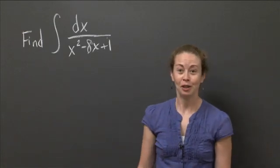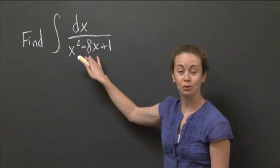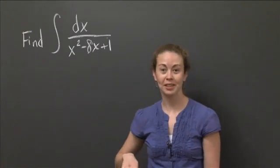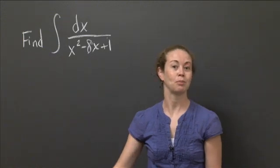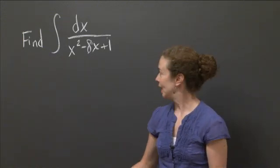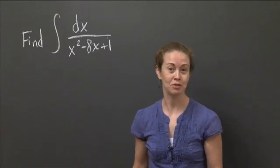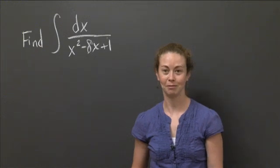So welcome back. Well, what we'd like to do is find an antiderivative to 1 over x squared minus 8x plus 1. And how we're going to do that is we're going to use the technique completing the square. I'm going to set up the problem, get it to a certain place, and then I'm going to let you finish it. And how do you know if you got the right answer? Well, you actually take a derivative of your answer and see if it gives you back 1 over x squared minus 8x plus 1. That's how you can check.